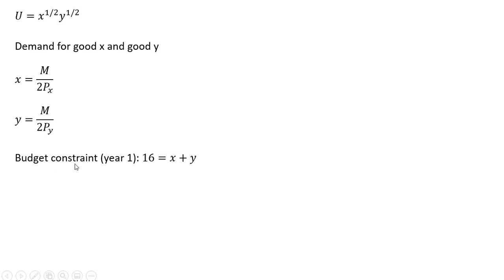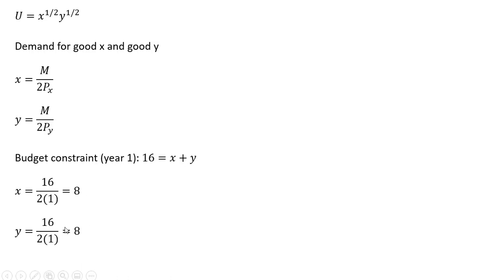Let's say the consumer's budget constraint is given by the following: the consumer has $16 of income, the price of good X is one, and the price of good Y is one. Given that information, the demand for good X is 16 divided by two times one, so the consumer will buy eight units of good X and eight units of good Y. Utility at this consumption choice will be eight.